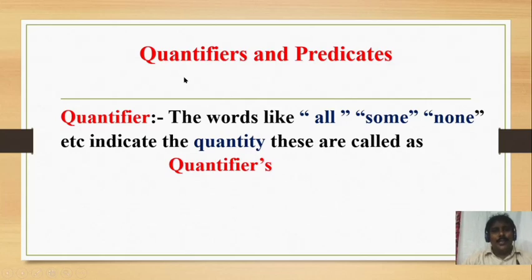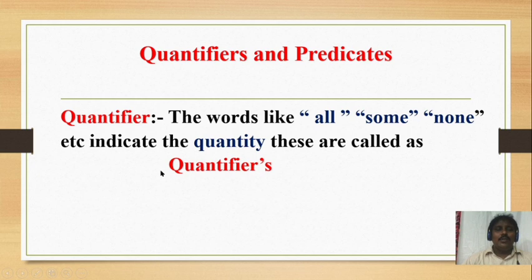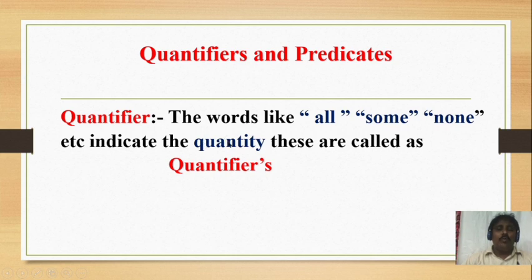Welcome back students. In this video we are going to see what are the different types of quantifiers and predicates, and their definitions. A quantifier means words like all, some, none, etc. that indicate quantity. Any word that tells about quantity is called a quantifier.